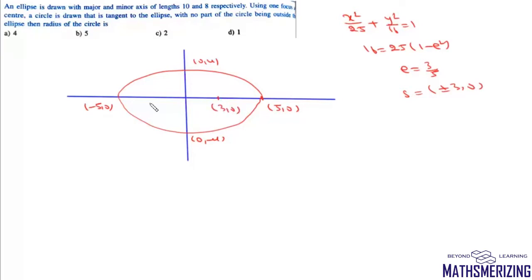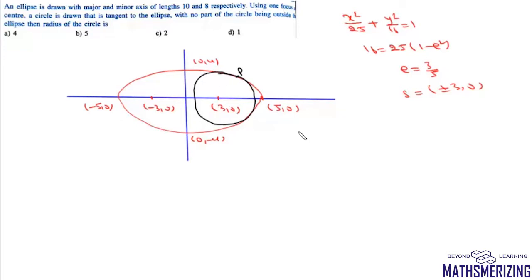One focus is at (3, 0) and the other at (-3, 0). Using one focus as center, a circle is drawn tangent to this ellipse. For this circle to touch the ellipse, a parametric point on the circle must equal a parametric point on the ellipse.